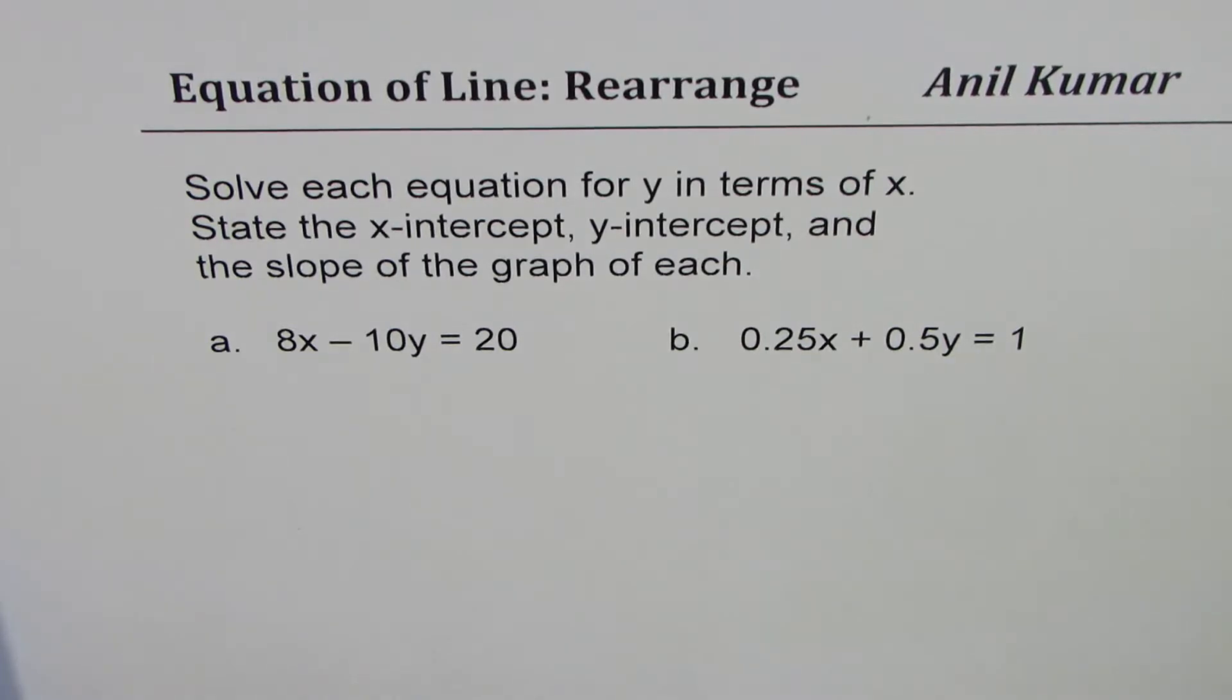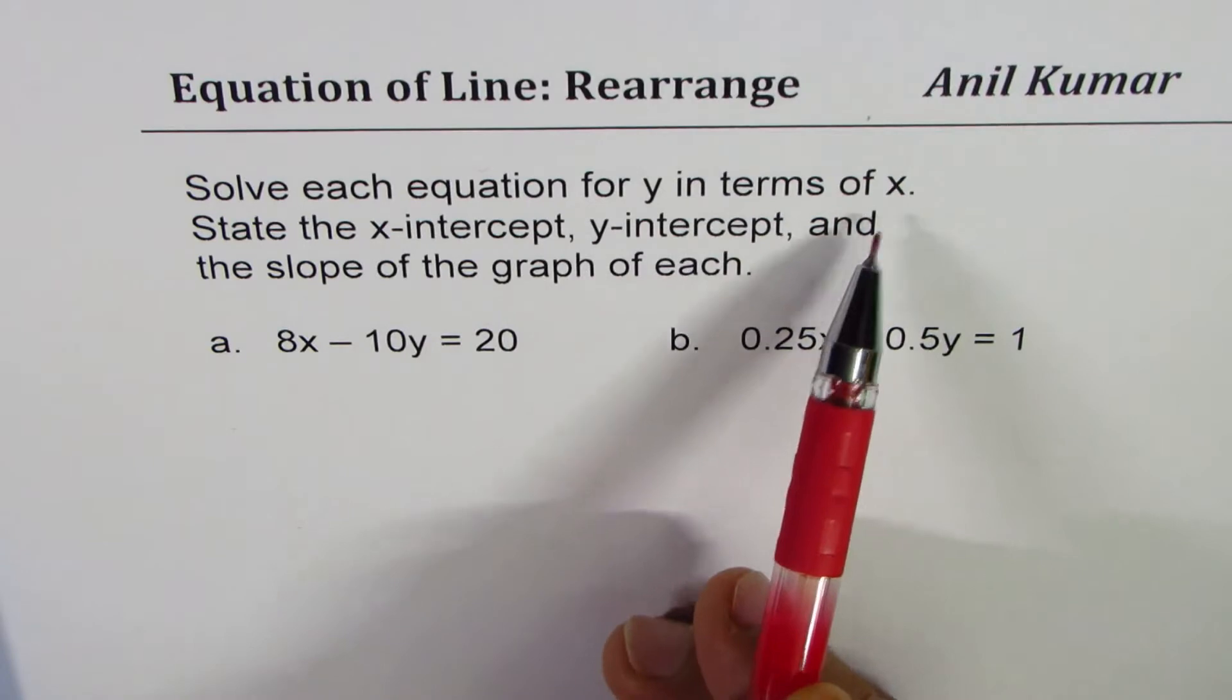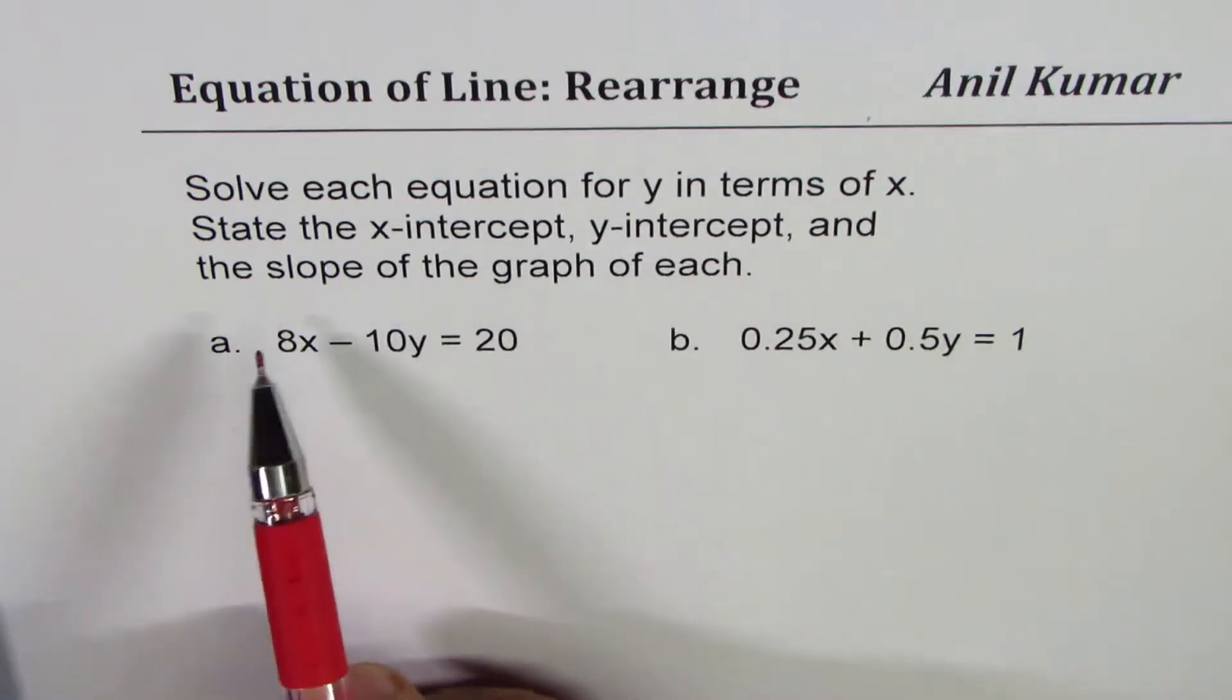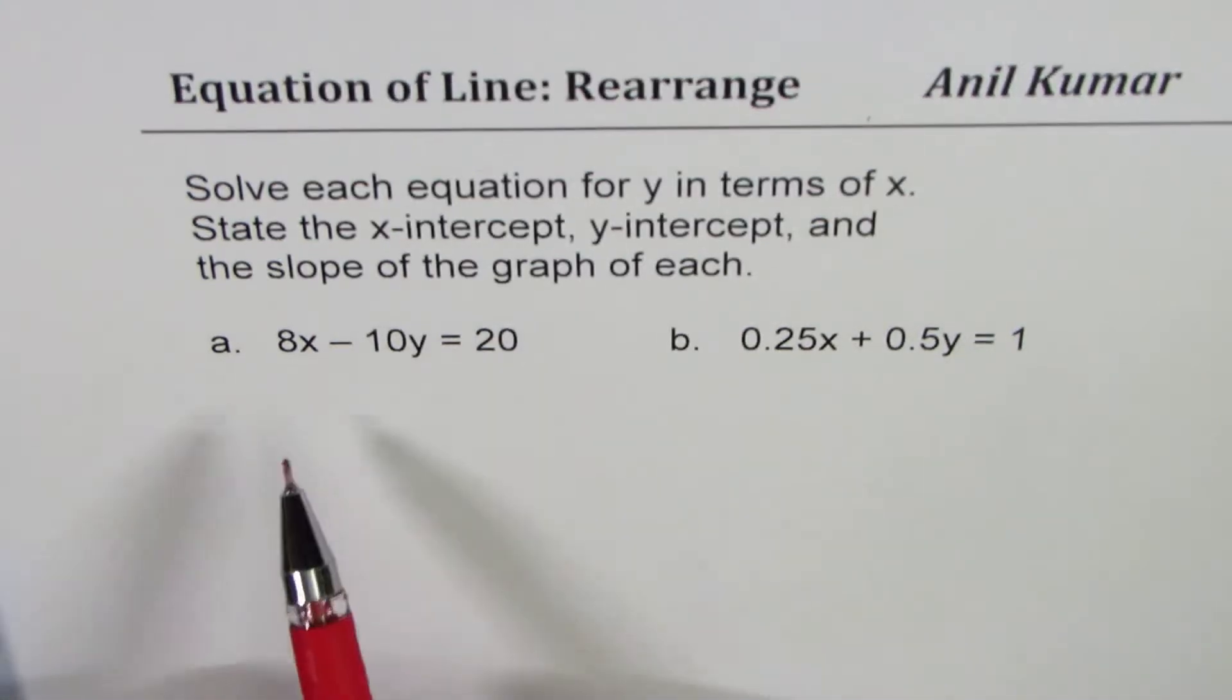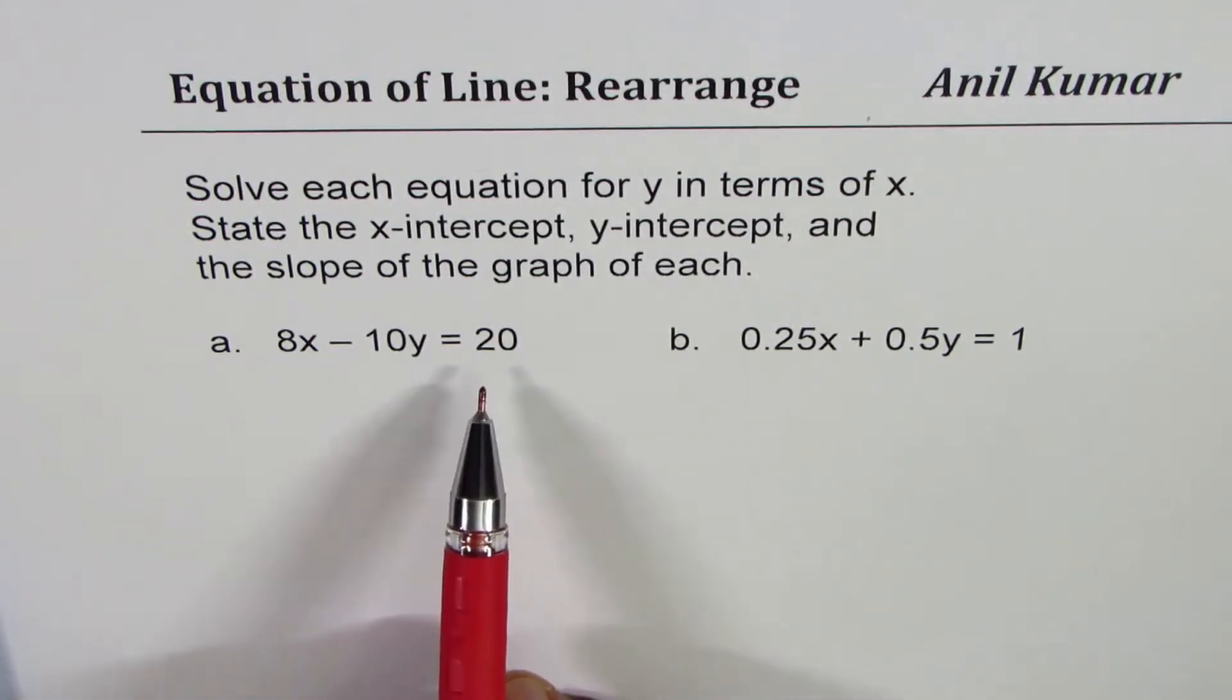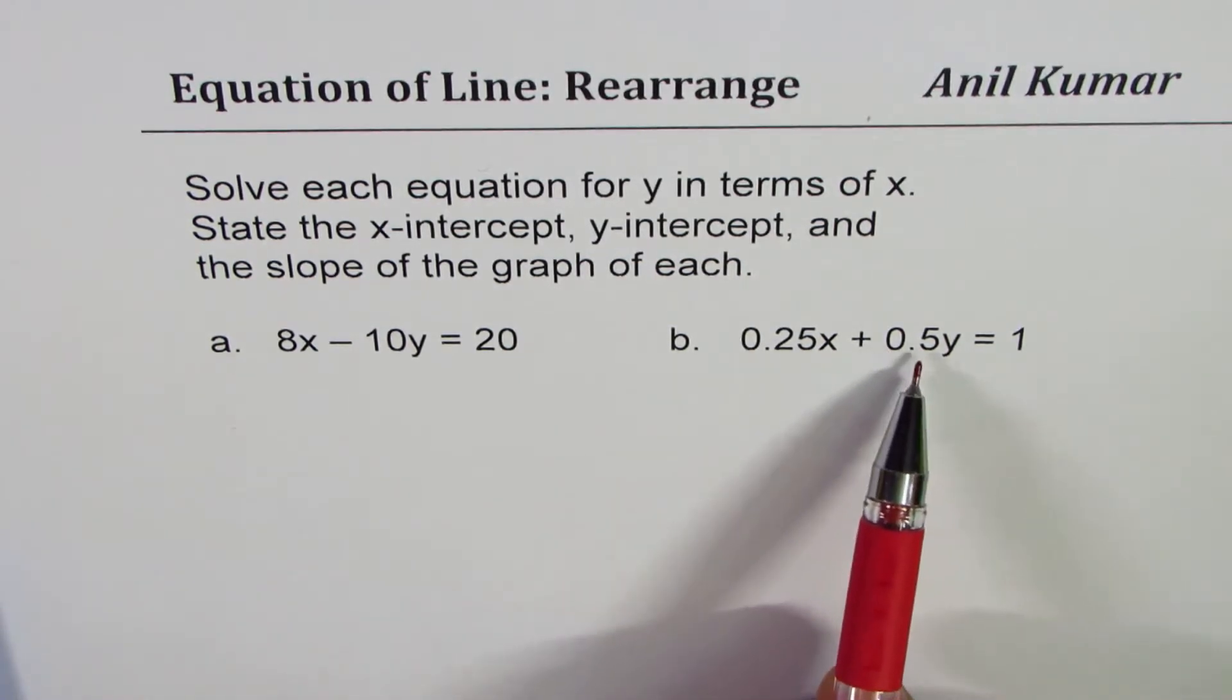The question here is, solve each equation of y in terms of x, state the x-intercept, y-intercept and the slope of the graph of each. We have two examples, one is 8x minus 10y equals 20, the other one is in decimals, 0.25x plus 0.5y equals 1.